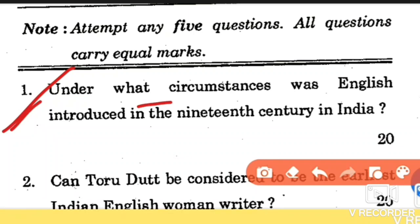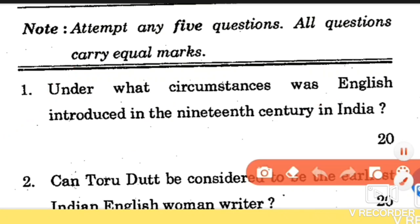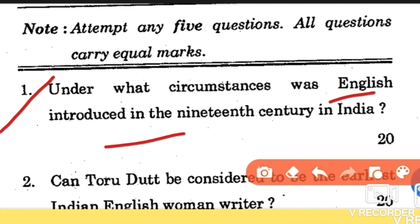First question: under what circumstances was English introduced in the 19th century in India? If you have studied this subject in every block in detail, you will easily be able to answer this. You need to mention the importance of English first and cover all the acts — the Charter Act of 1813, 1835, Lord William Bentinck, the Revitalization of Charter Act, 1854 Sir Charles Wood Act, Lord Ripon's Hunter Commission 1882, the Nehru-Gandhi era, and the current scenario of English after independence.